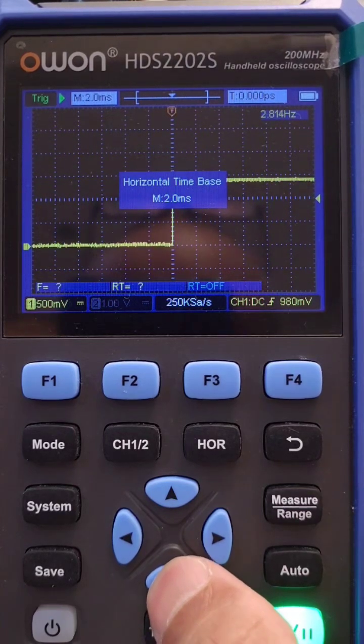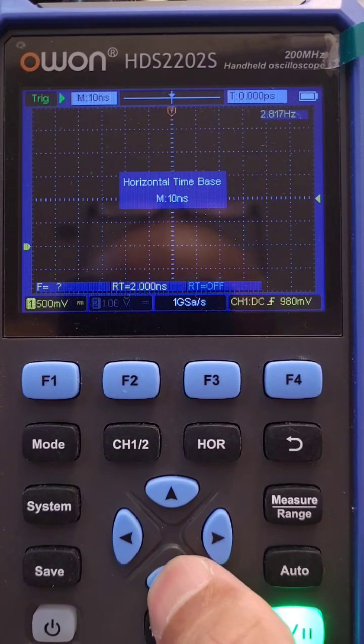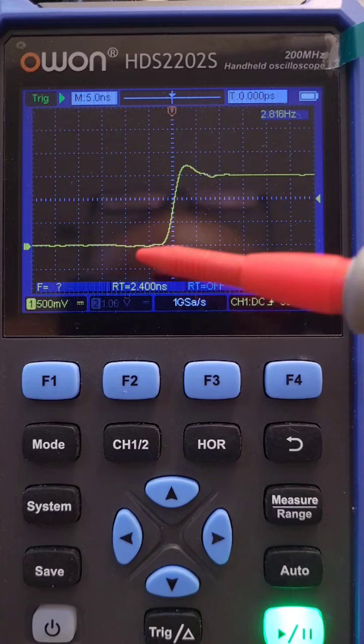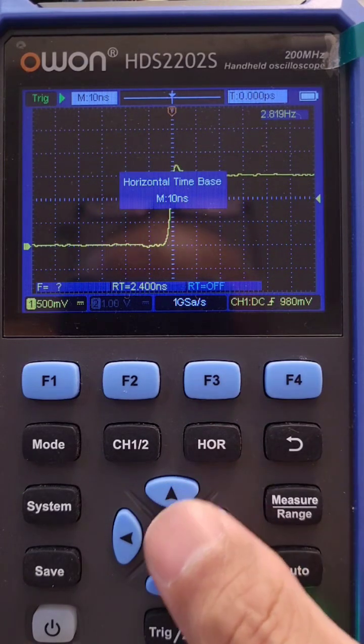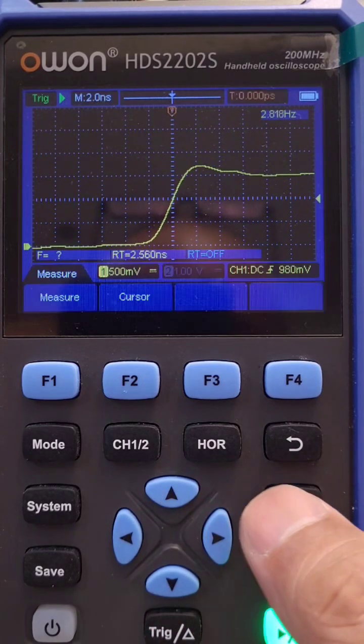If you actually zoom in, one nice thing about it is that it has its own rise time measurements: 2.4 nanoseconds, 2.2. You can actually push it up, make it narrower.